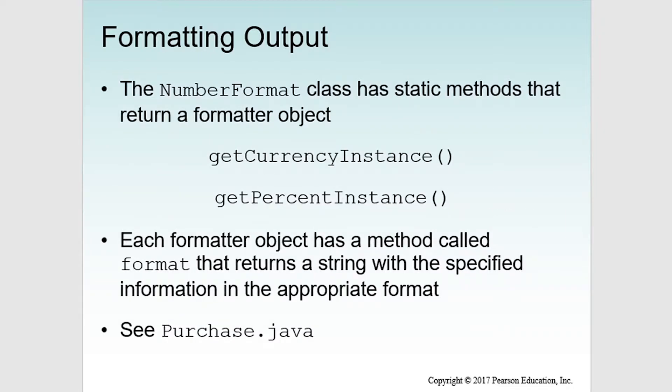The NumberFormat class has static methods that return a formatter object: getCurrencyInstance and getPercentInstance. Each formatter object has a method called format that returns a string with the specified information in the appropriate format.